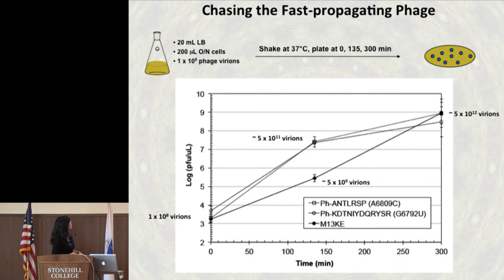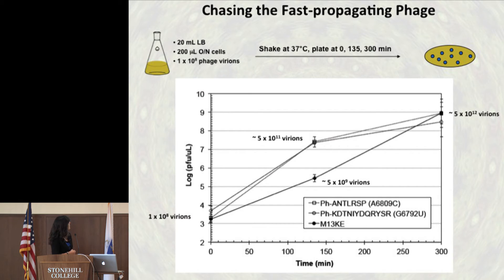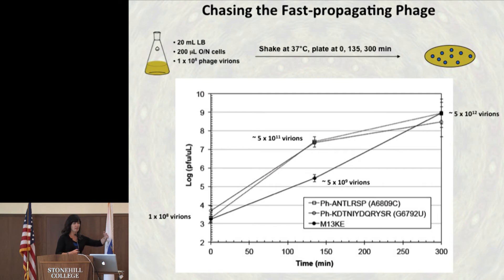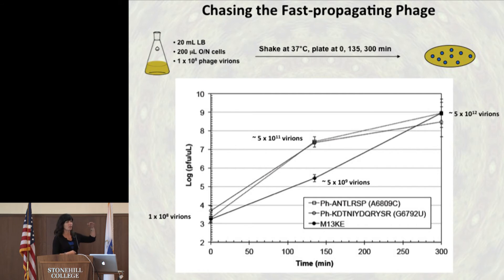The way we look at that is with a graph. We take a culture, put in E. coli cells and different phages — some with the mutation, some without — and let them grow and make copies. We try to start with about the same amount for every sample. At the end of 5 hours they exhaust the cells to the same degree, but in the middle we see a big difference. On a log scale, the mutant phage produce about 100 times more virions compared to non-mutant phage.